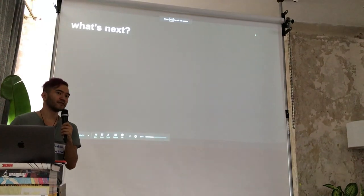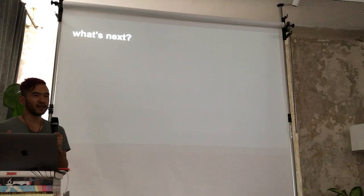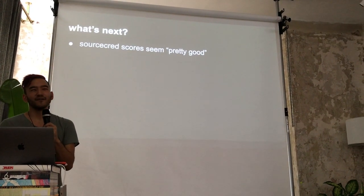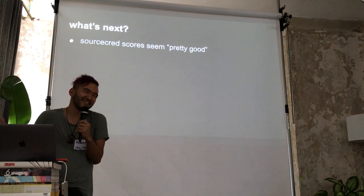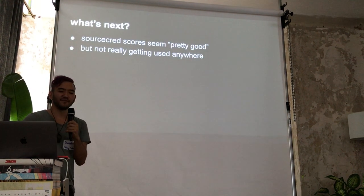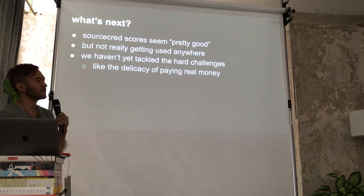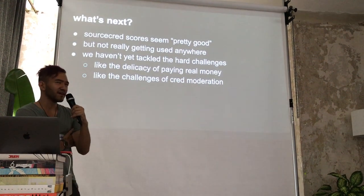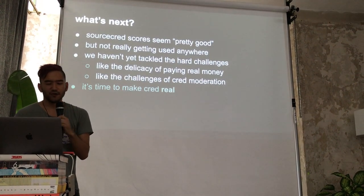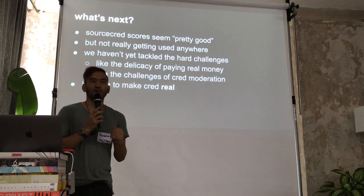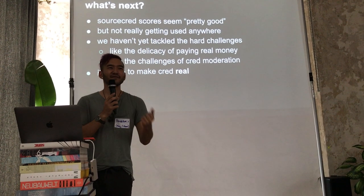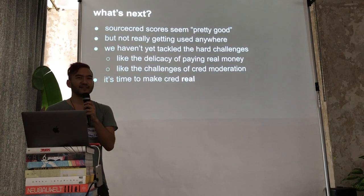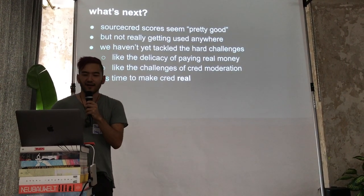We've got this prototype technology giving scores on open source projects — but where is this going? So far, open source maintainers say the scores make sense, but it's not actionable yet. I want SourceGred to tackle the hard challenges: what happens when we actually start paying money based on these scores, and what weird dynamics come up? I think it's important this happen within the SourceGred community itself first — creating systems that reify power and give people money is contentious and could do a lot of harm if done poorly. SourceGred needs to dogfood this system before encouraging anyone else to use it.